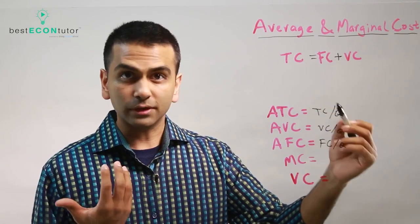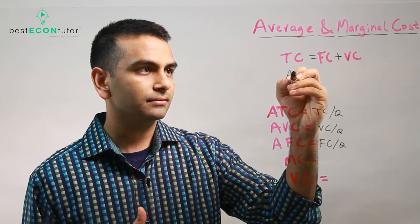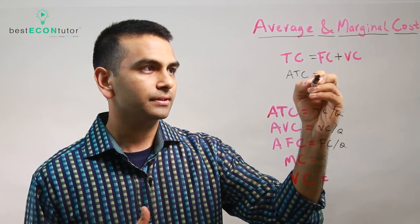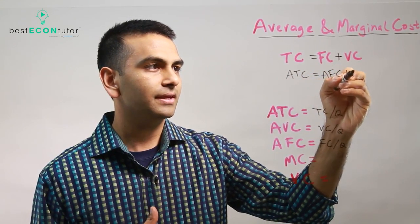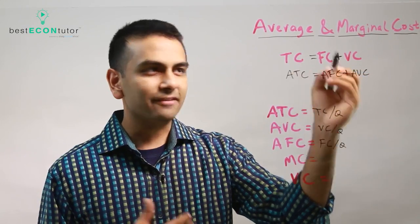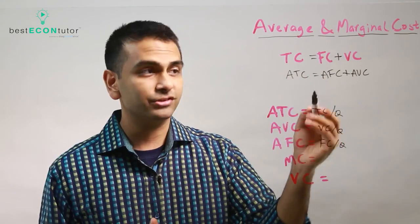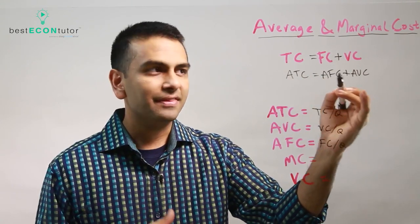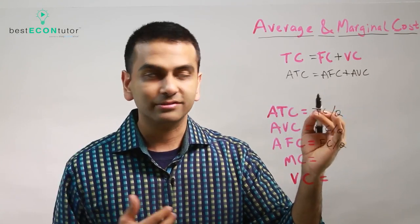Now, there's another equation we can come up with. ATC equals AFC plus AVC. So looking at that first equation, where the fixed and variable add up to the total, well, the same is true for their averages. The average fixed cost and the average variable cost add up to the average total cost.